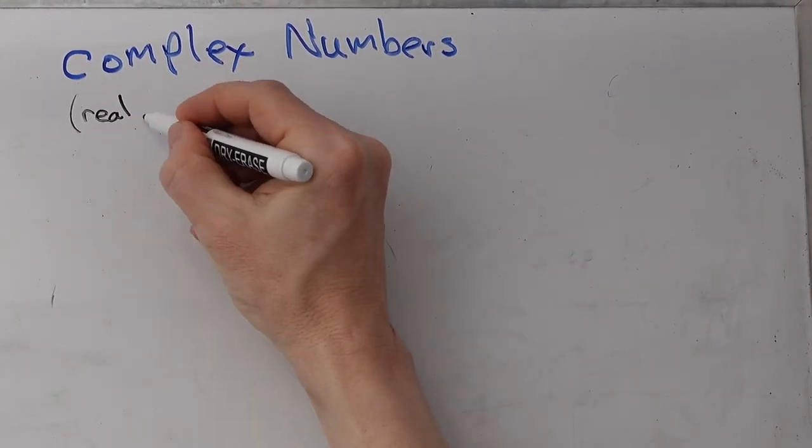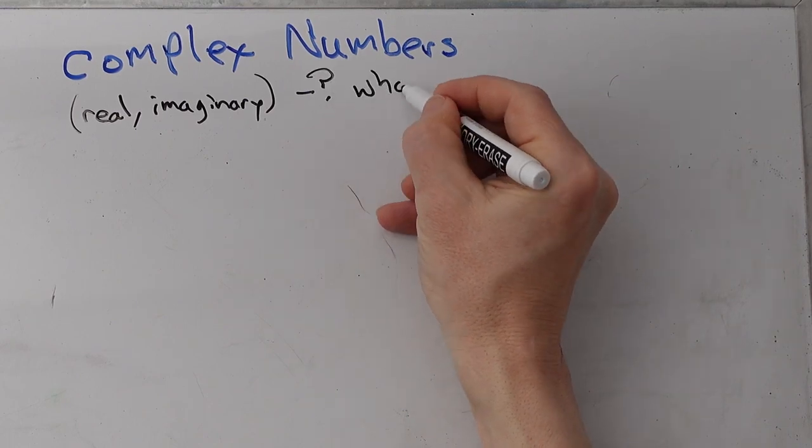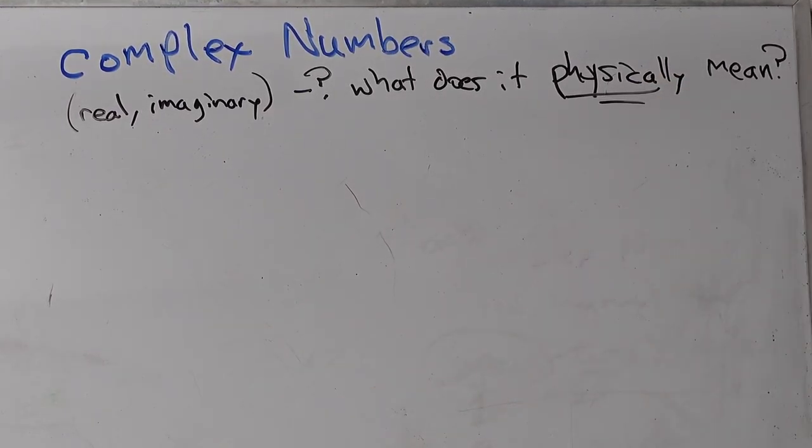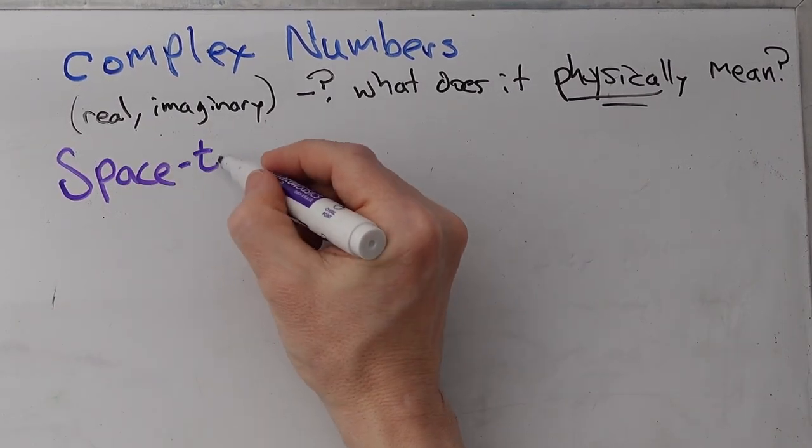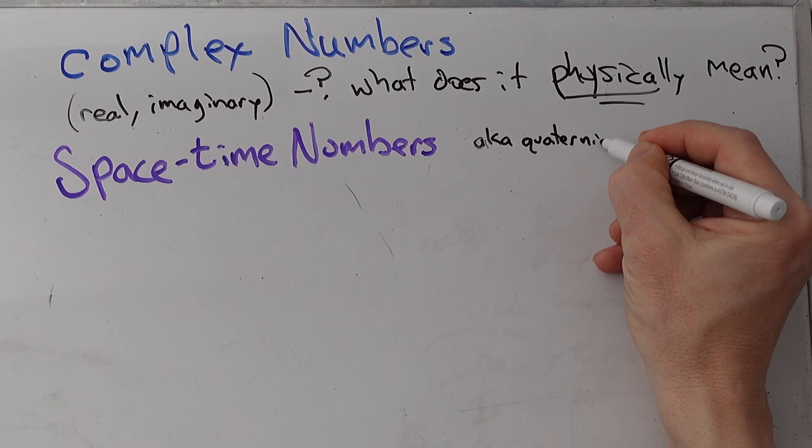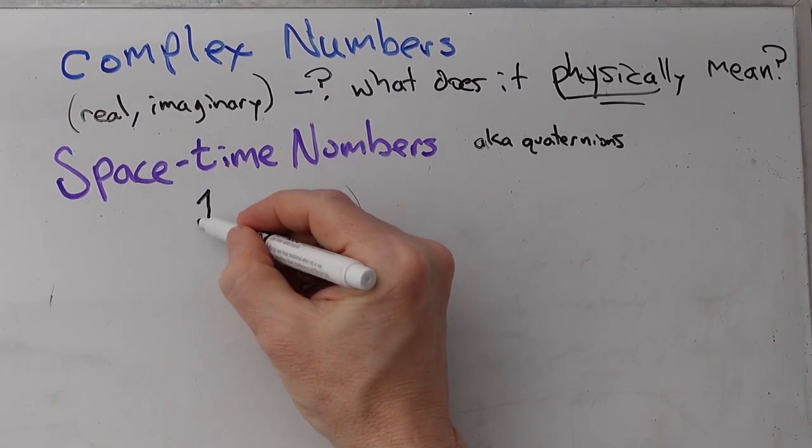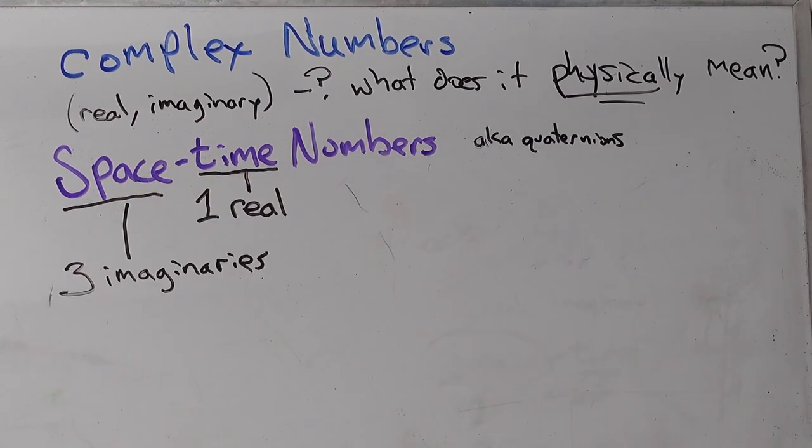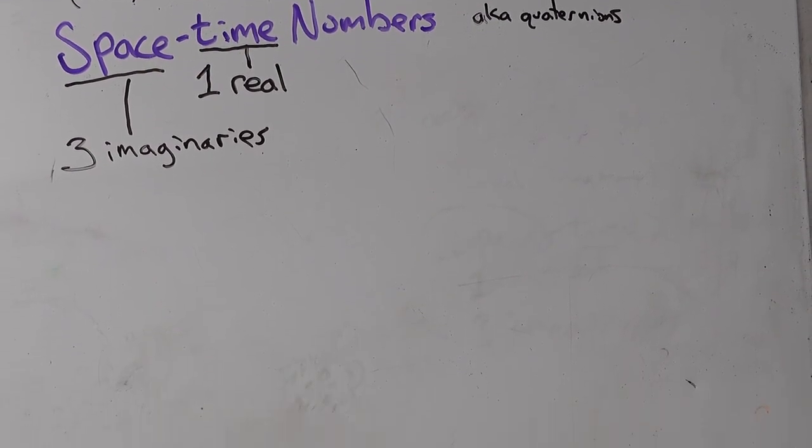All right, so complex numbers. Used all the time in quantum mechanics. It's got a real imaginary. But what does it physically mean? Well, with space-time numbers, which is a slight generalization, a.k.a. quaternions, I know what that means. Time, there's one of them. And it's a real number. And there are three space terms.